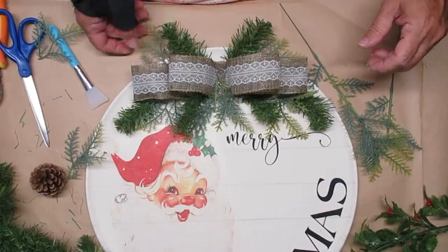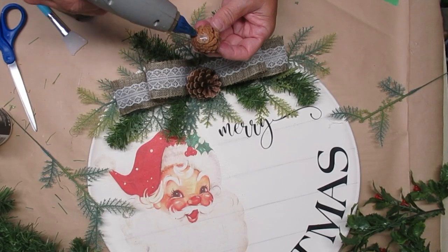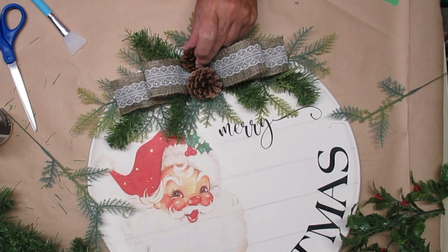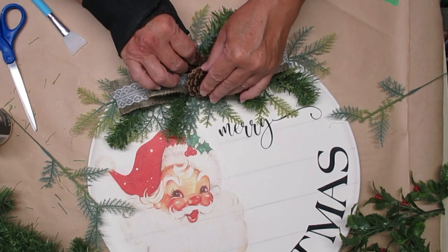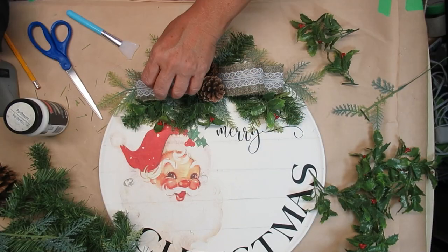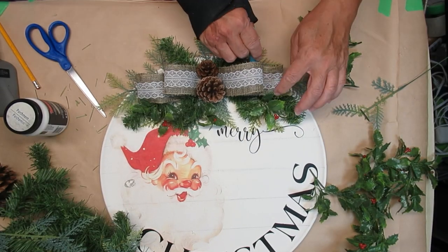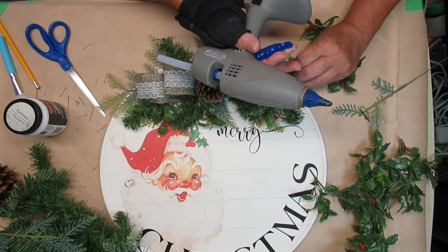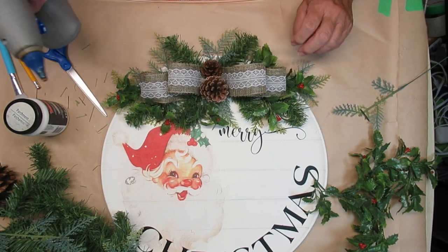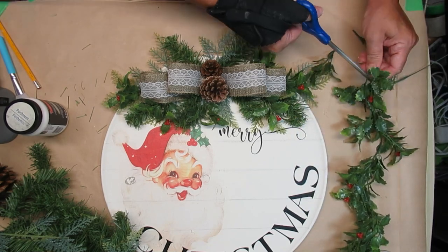I added a couple of pine cones inside the bow just to finish it off and then the last thing I did was add some of the little holly branches that have some tiny little red berries. And I really love how this sign turned out. I think I probably should have put the Merry a little bit lower down so you could see it better but I still think it's pretty neat.